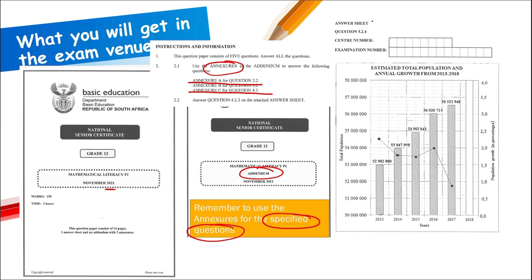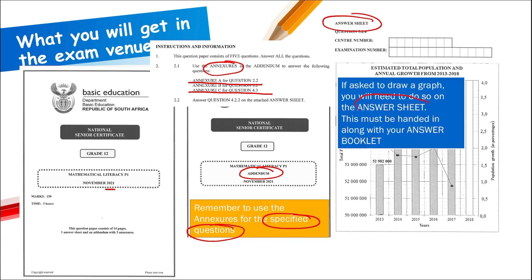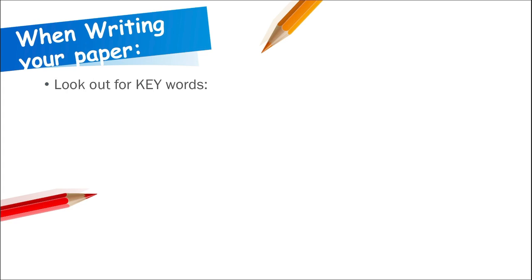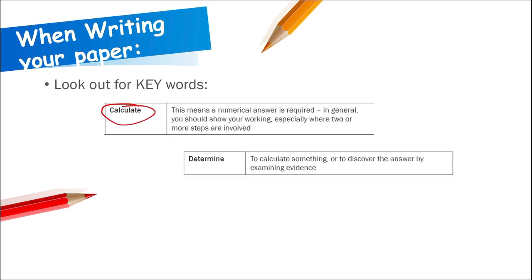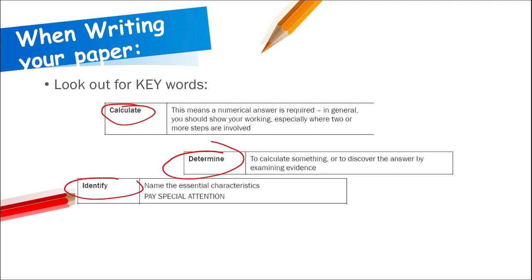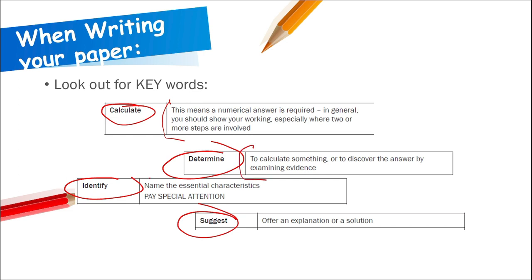You'll also probably get an answer sheet if they want you to draw a graph — this must be handed in along with your answer booklet. The paper will tell you which question must be done on the answer sheet. When approaching the paper, look for keywords such as 'calculate,' 'determine,' 'identify,' and 'suggest.' If you see 'calculate,' you know it requires a numerical answer and you must show your working.